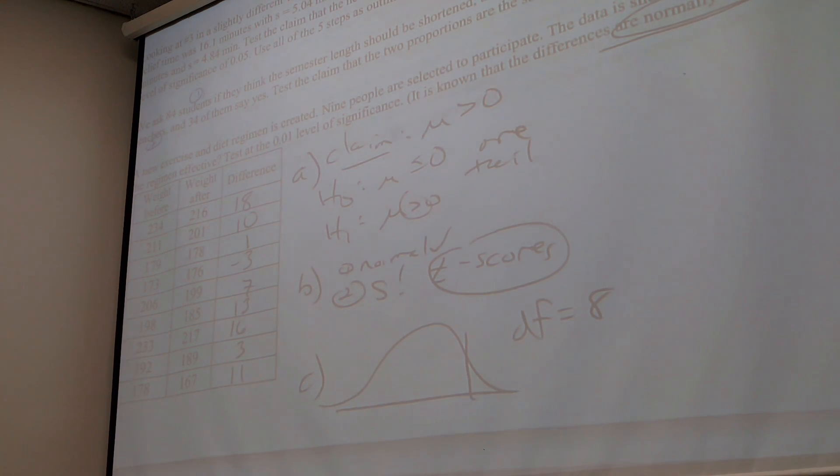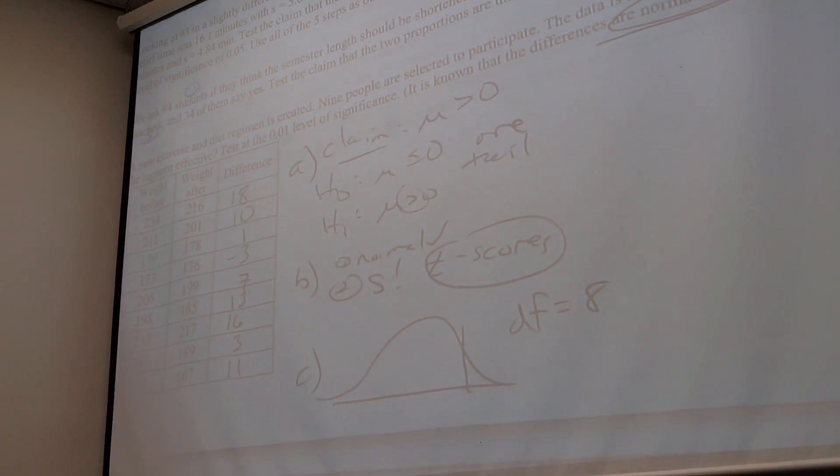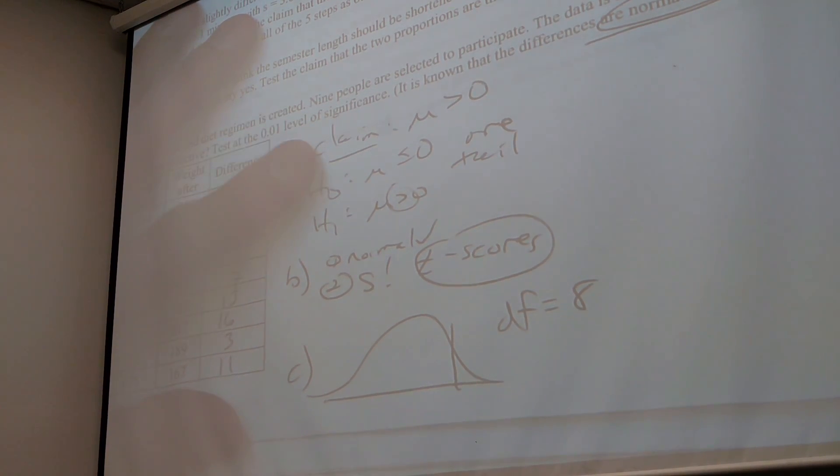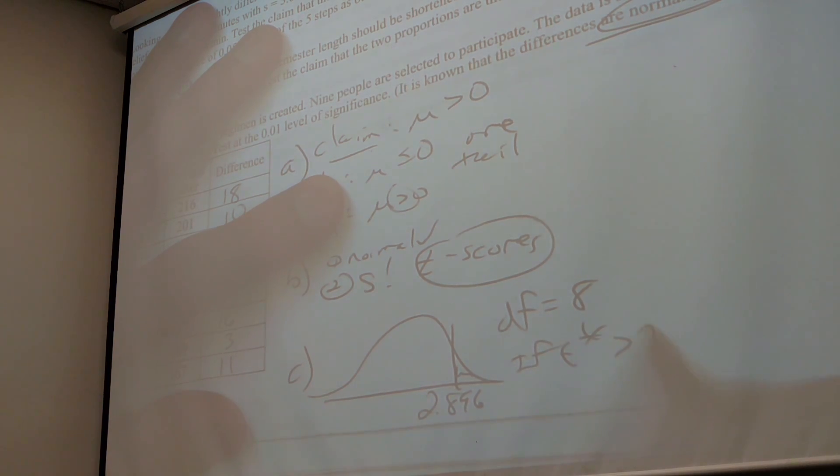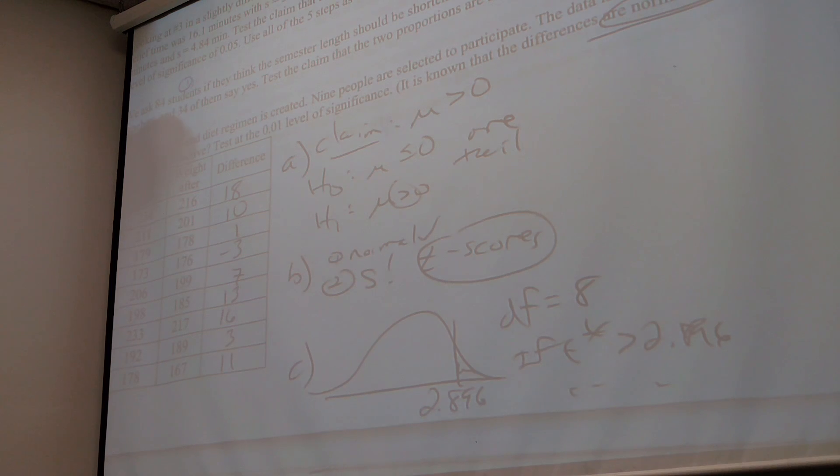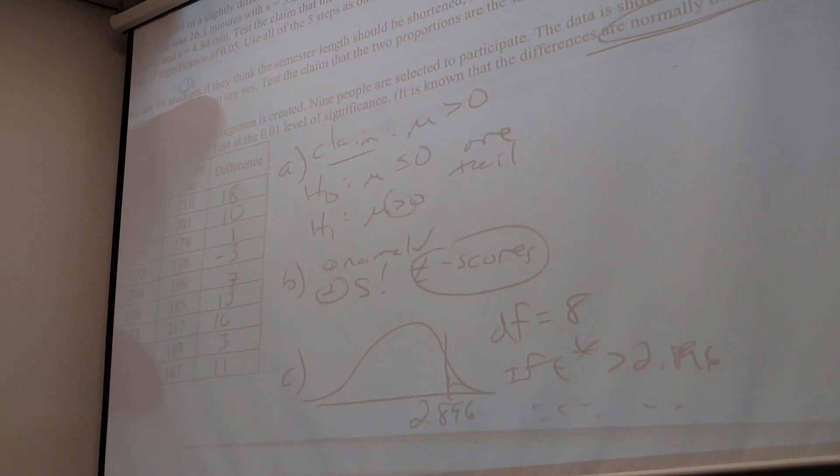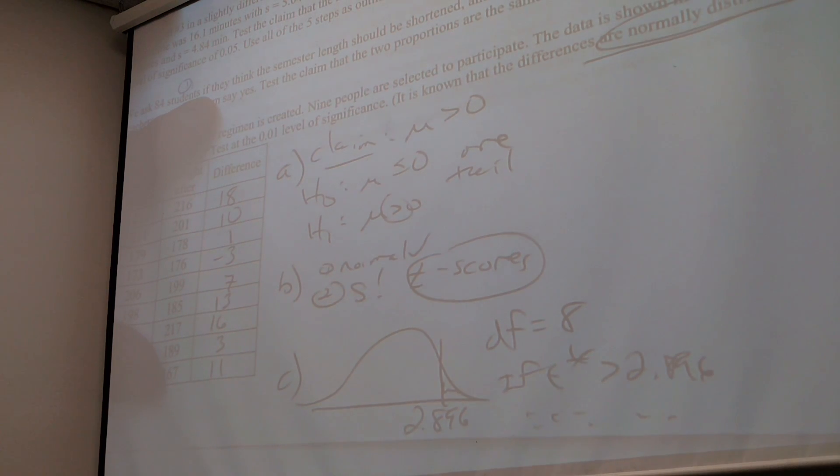Say one more count of this. Two point eight, nine, six. Yes. Verification. Yes. Two point eight, nine, six. So if T star greater than 2.896, reject. Don't do this on the test. Blah, blah, blah. Especially in class, Jeff.